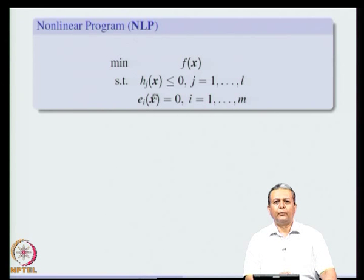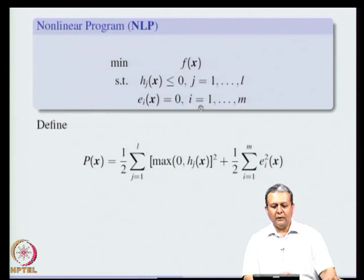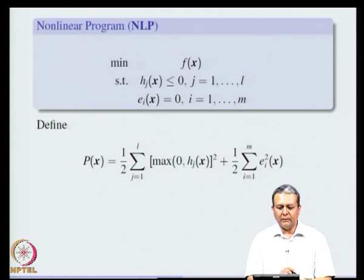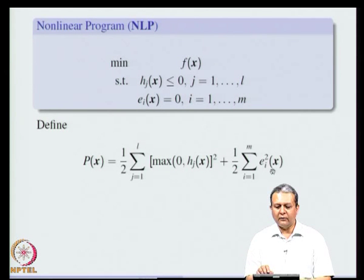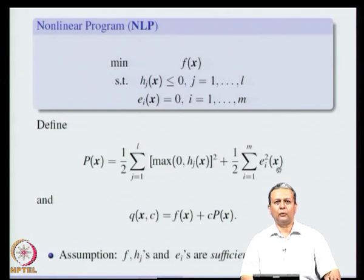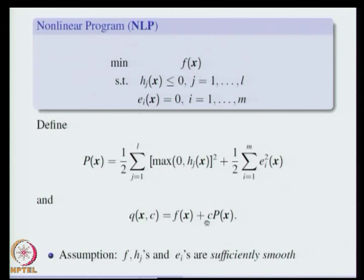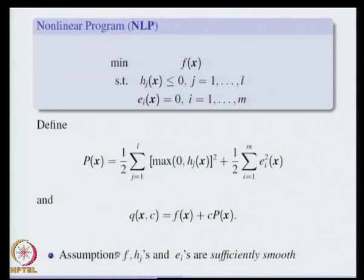For a general non-linear program, we minimize f(x) subject to h_j(x) ≤ 0 for j = 1 to l and e_i(x) = 0 for i = 1 to m. We define the penalty function similarly: for inequality constraints we use max(0, h_j(x))², and for equality constraints we use e_i(x)². Assuming f, h, and e are sufficiently smooth, we define q(x, c) = f(x) + c·p(x) where c is a positive constant. The question is whether the sequence x_k generated by minimizing q(x, c_k) converges to x*.